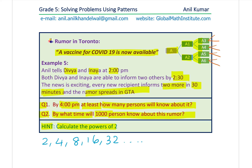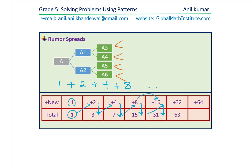Now we have our questions to answer. Question one: at 4 p.m., at least how many will know about it? We have to add time to our series. This happens at 2, this is at 2:30, this is at 3, this is at 3:30, and that should be the position at 4. At 4, 63 people will know about it.